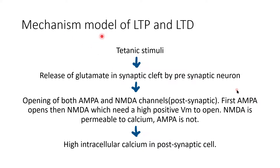Let us come to the mechanism model of long-term potentiation and long-term depression. Tetanic stimuli cause release of glutamate into the pre-synaptic cleft by the pre-synaptic neuron. The effect on the post-synaptic membrane is opening of both AMPA and NMDA channels. AMPA opens first, because it requires a very low positive membrane potential to open. NMDA opens gradually thereafter because it requires a high positive membrane potential. NMDA is permeable to calcium but AMPA is not. As a result of NMDA channel opening, there is high intracellular calcium in the post-synaptic cell.